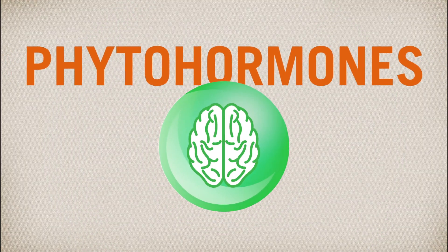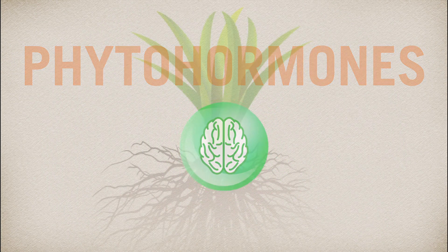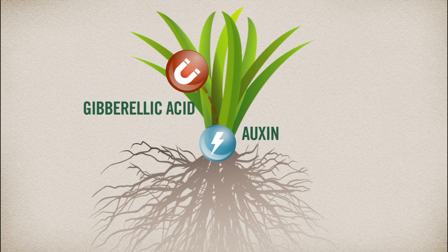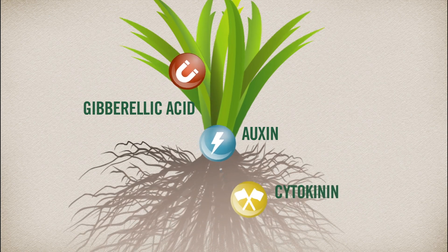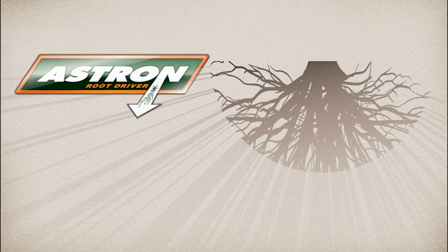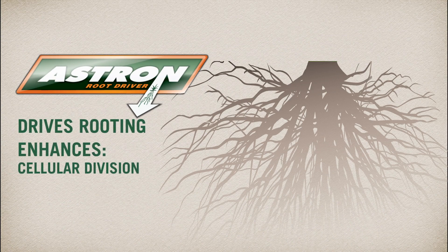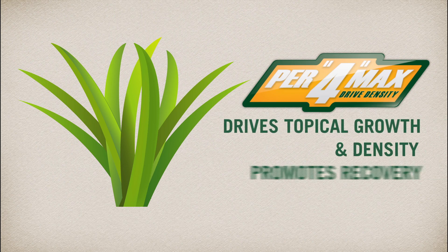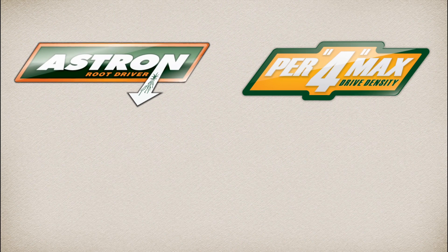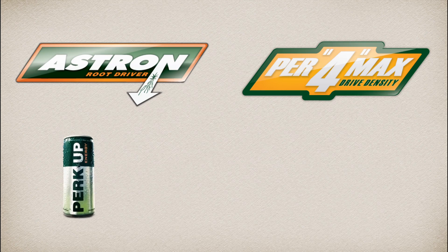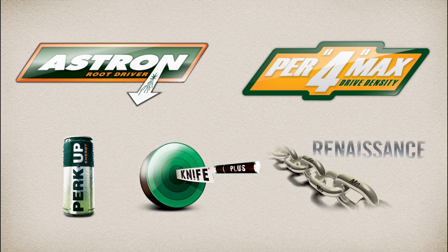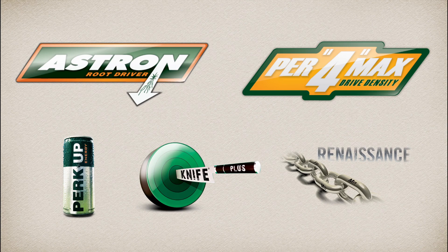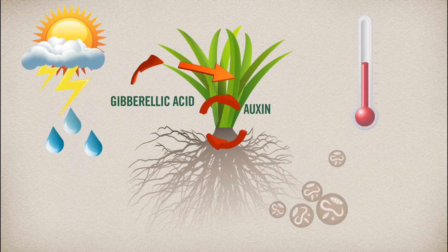That's where Floratine's patented phytohormone technologies shine. They give turf managers the tools to overcome these stresses by providing the proper ratios of growth hormones to drive either rooting or topical growth and density. Astron is designed to drive rooting, enhancing cellular division and root proliferation. Performax is designed to drive topical growth and density, helping promote recovery of damaged turf. Three additional products are available: Perk Up, providing readily available calcium and carbohydrates for heat stress relief; Knife Plus, for rapid greening; and Renaissance, a multivitamin for turf to help produce chlorophyll.